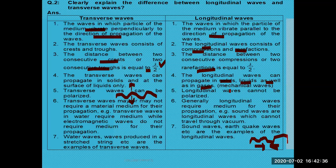Longitudinal waves cannot be polarized because they move only along the same direction away from the source. But transverse waves can be polarized. Sunlight is one of the best examples of electromagnetic waves, where there are infinite directions for the waves to vibrate — up, down, left, right, and in between. After polarization, we select only a portion of the light and reject the rest.